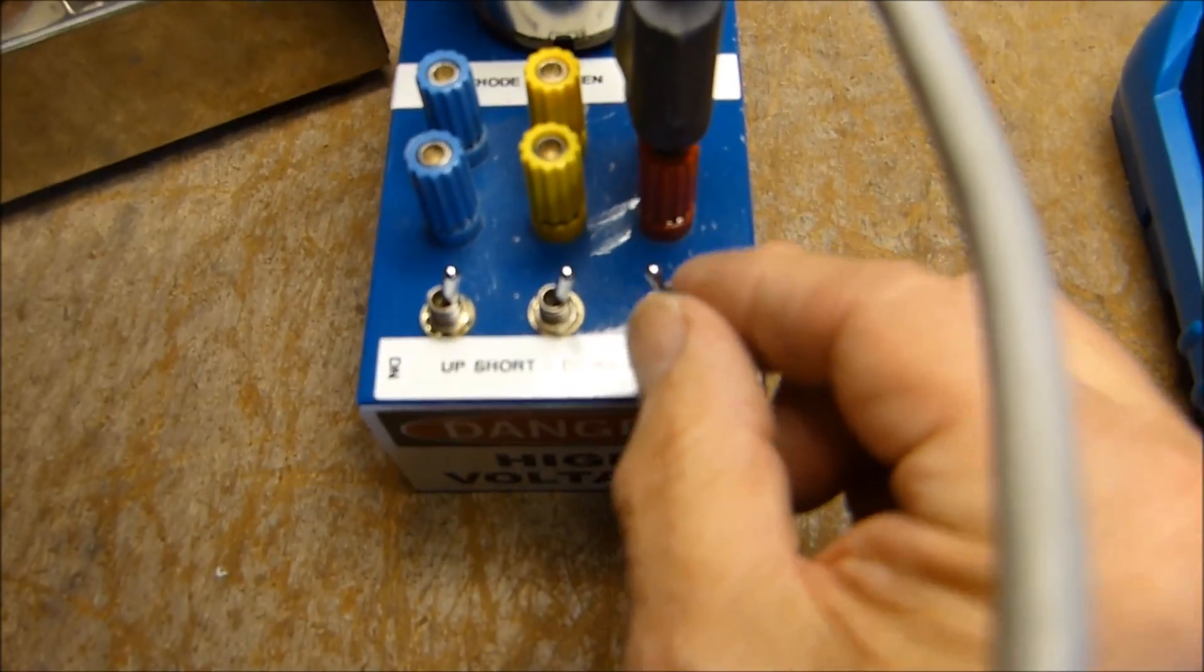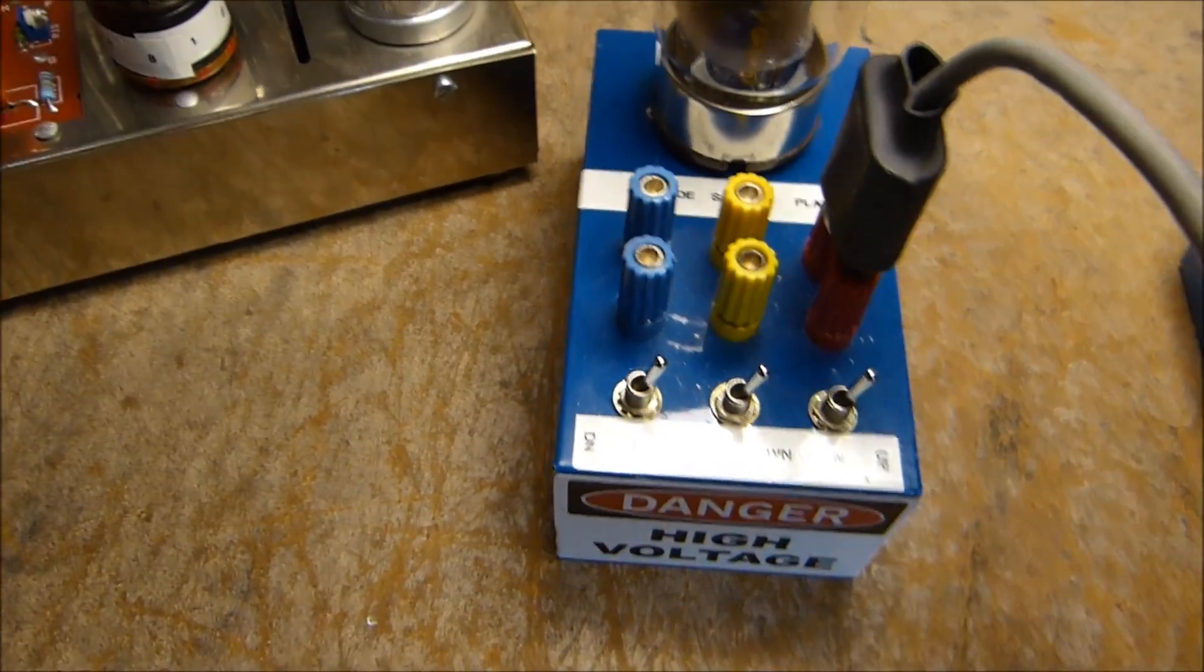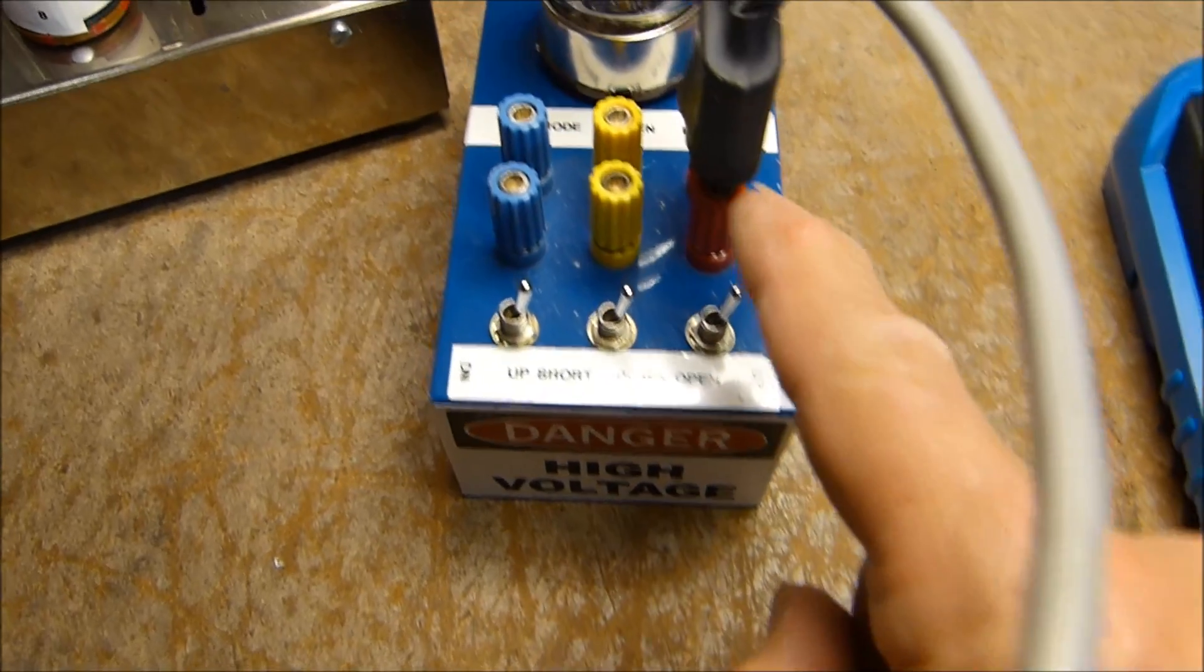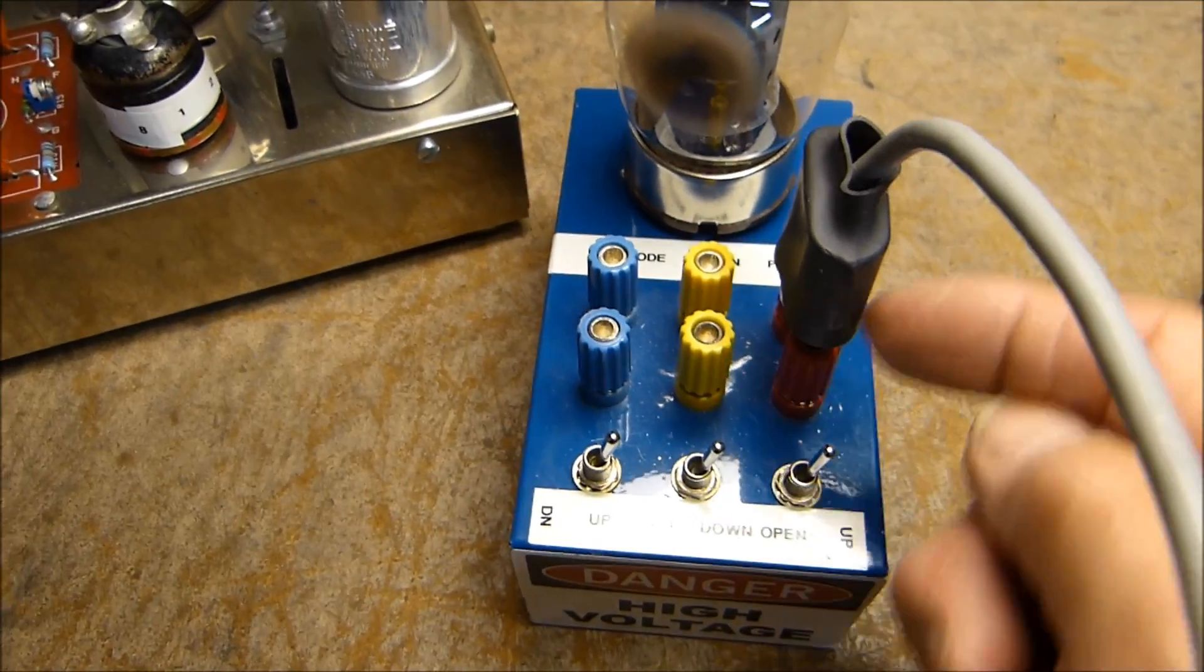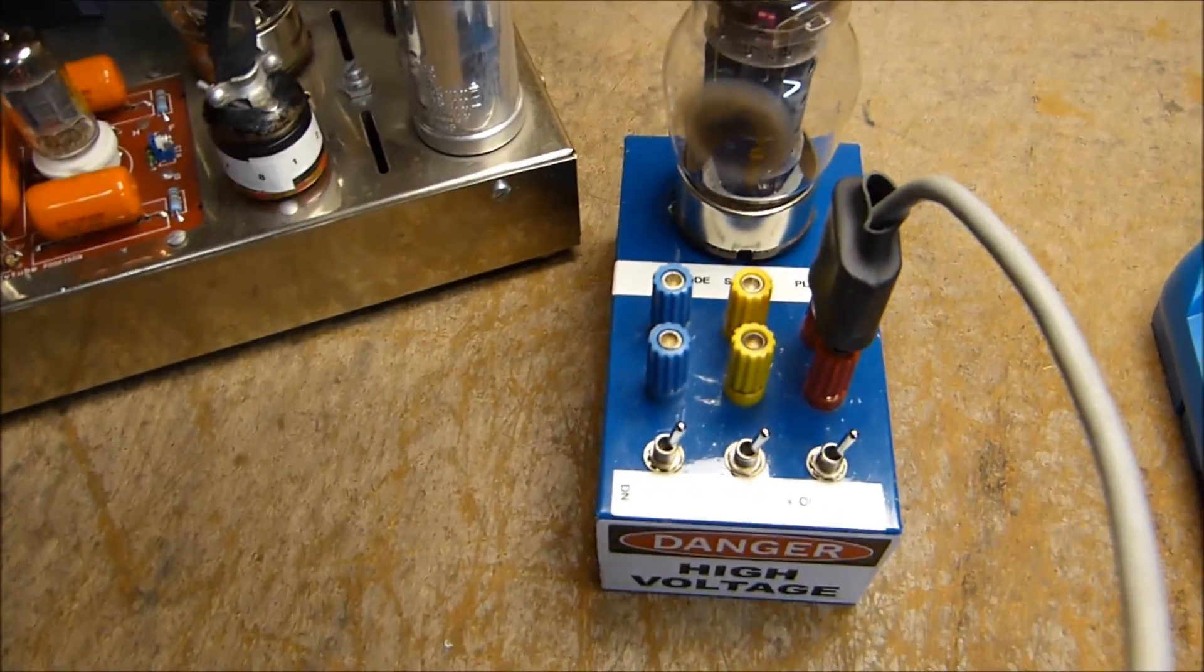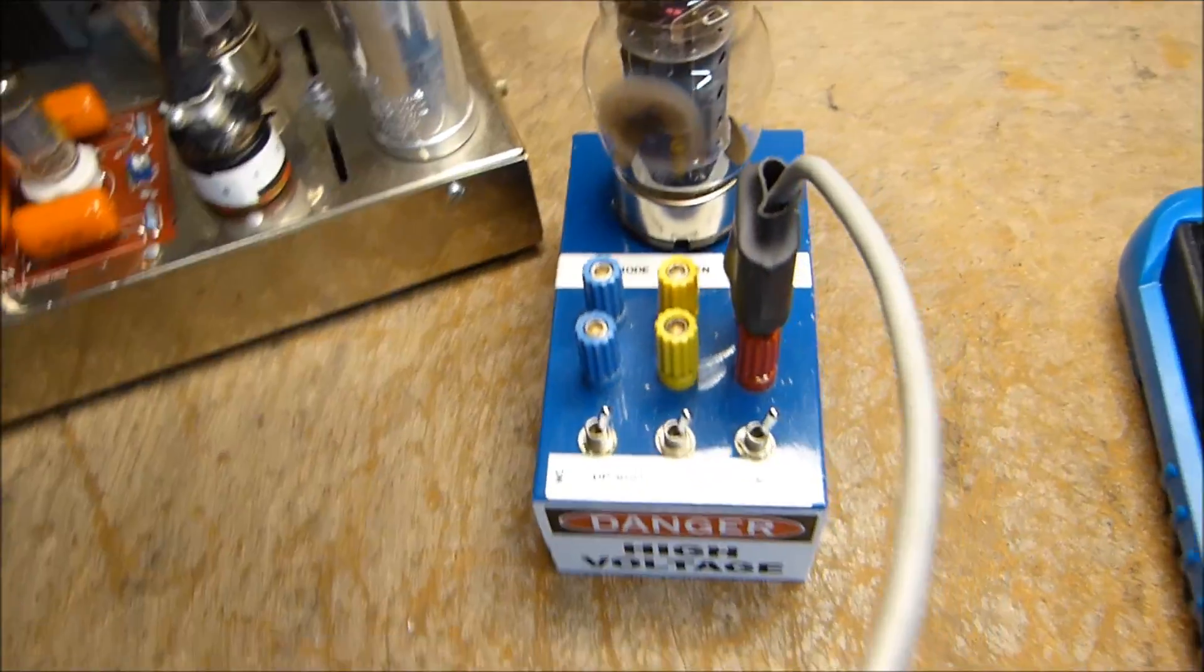Then we make sure we short it and close the switch before we pull the probe out. I believe that if you open up the plate with the tube in an operating condition like it is now, you'll destroy your tube because the highest potential is going to be on the screen.